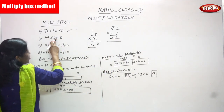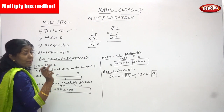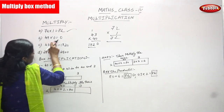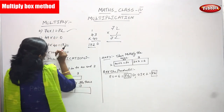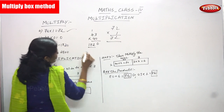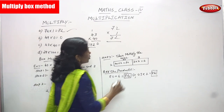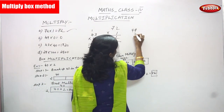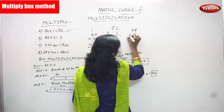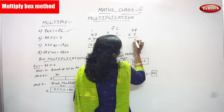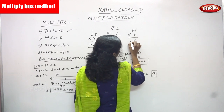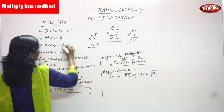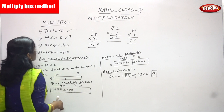So 49 into 0 — rule 2 is applicable here. Any number multiplied by 0, you get 0 as the product. So 49 into 0 you get 0. For example: 9 into 0 is 0, 4 into 0 is 0. So the answer is 0. Rule 2 is applicable here.